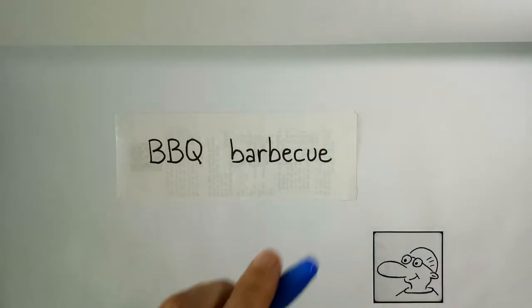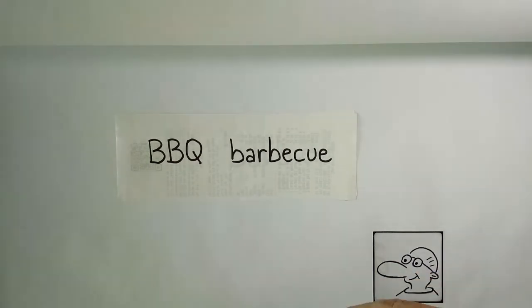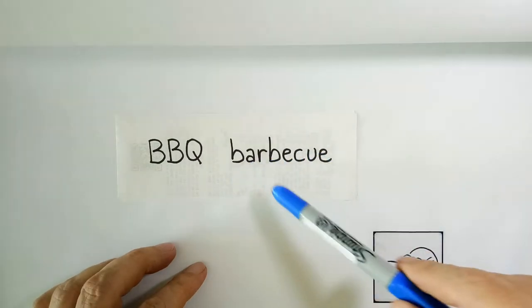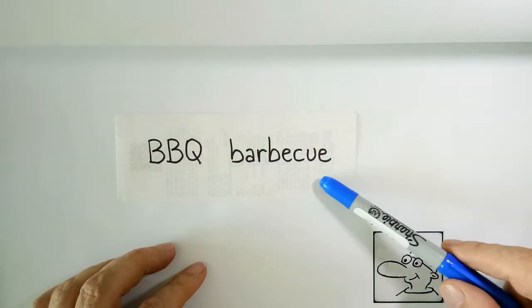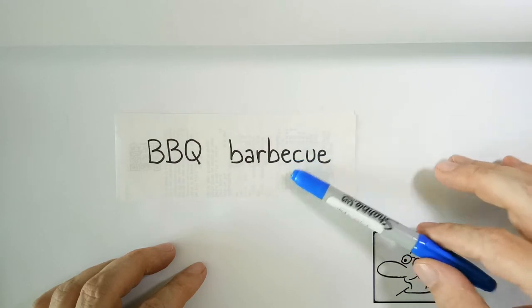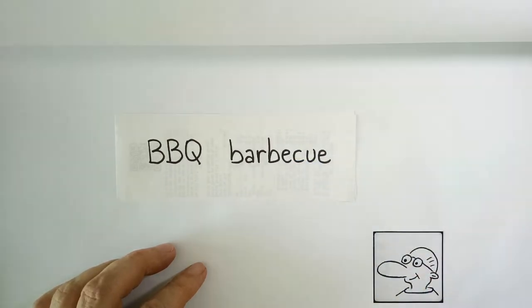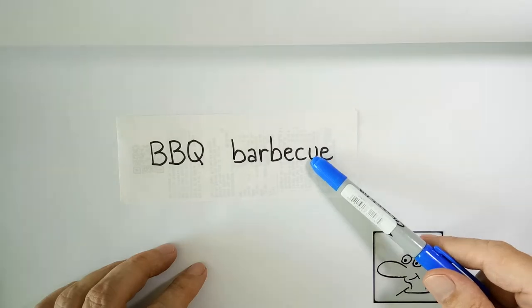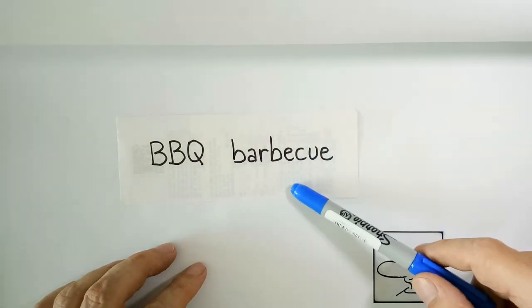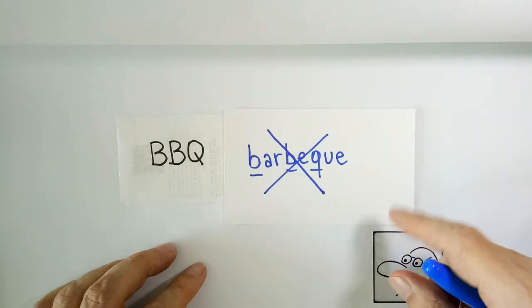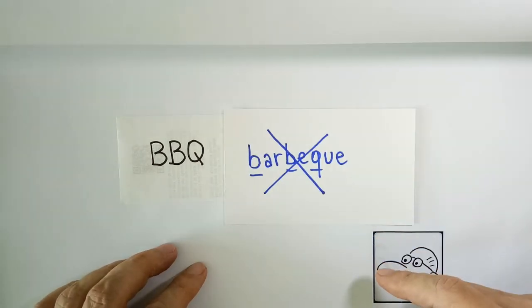If you use a computer, a word processor, your program will tell you. It should be underlined in red. If you use Microsoft Word, then you right-click on it and you correct your spelling. But if you see it somewhere on a message board, I'm going to say it's spelled wrongly about 50% of the time, maybe more.